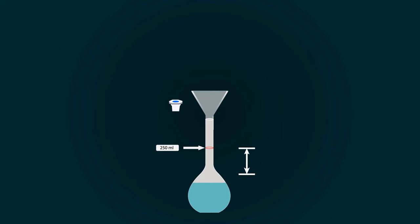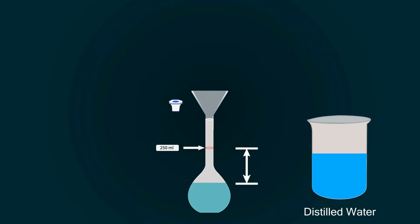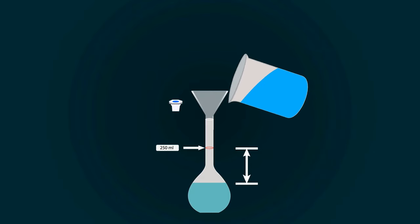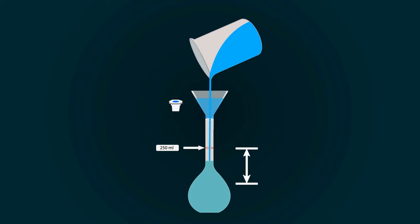You have to fill the volumetric flask up to the 250 milliliter mark. So for that, you have to add more distilled water. Take more distilled water into an empty beaker and pour it into the volumetric flask.